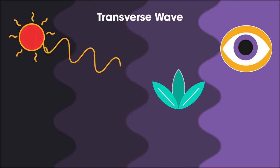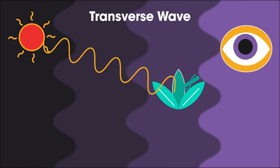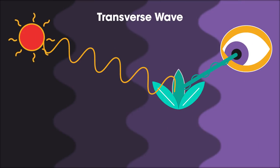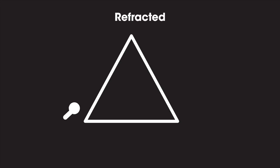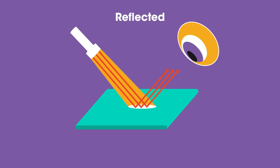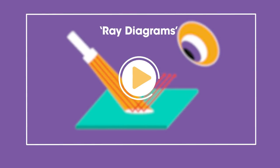Light is a form of radiation that travels as a transverse wave. Light behaves in various different ways. It can be refracted and reflected. For more on this see our video on ray diagrams.